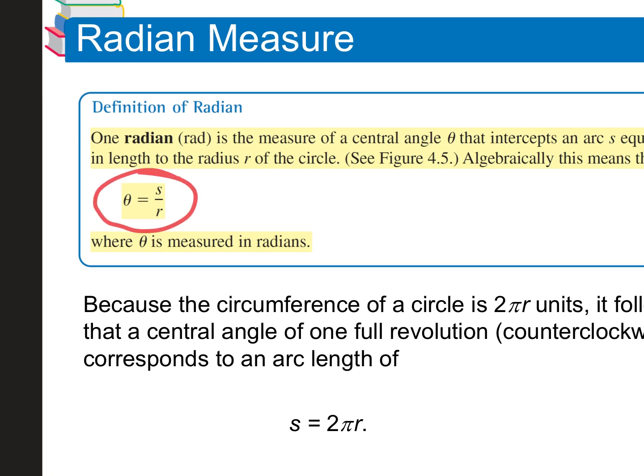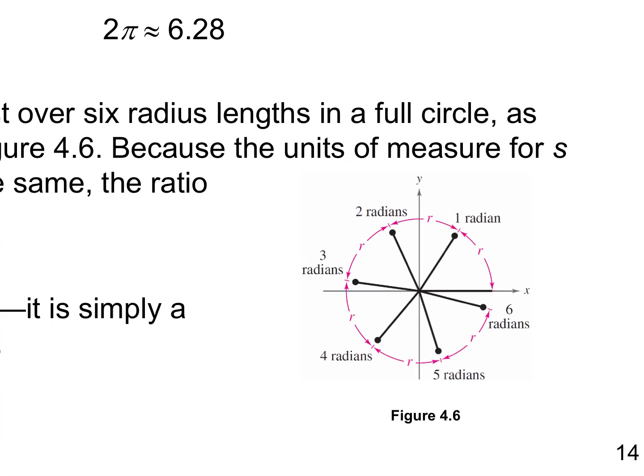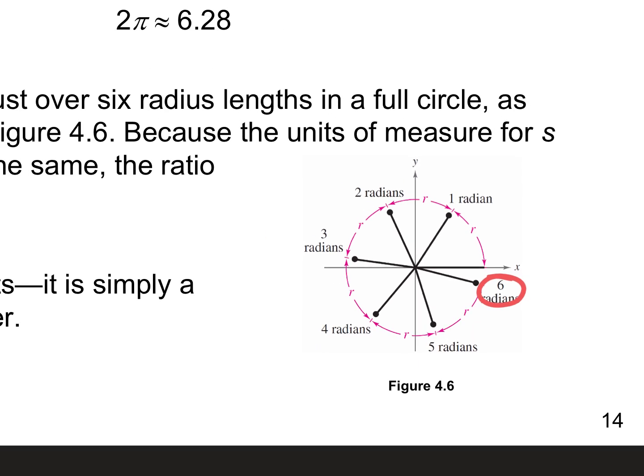A radian is the ratio between the arc length and the radius from the central angle. Look at how many radians are in a whole circle — there are six total radians. Each radian is a little less than 60 degrees. If you cut the unit circle into six pieces, each piece is about 60 degrees. There are six radians in one whole unit circle, and that's where we get pi over 2, pi over 4.